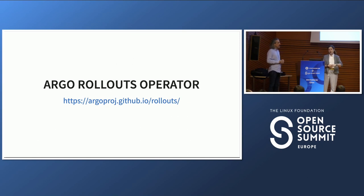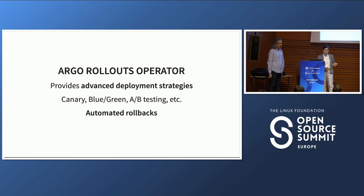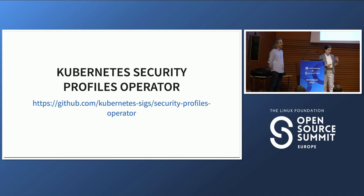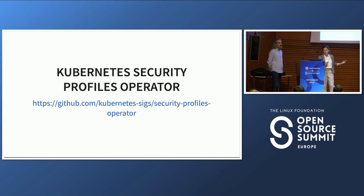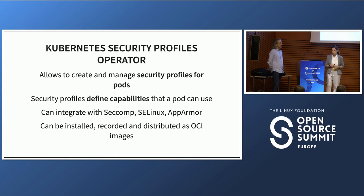We use the FluxCD Helm operator, which manages Helm charts for our environments in a declarative state — we can read the status of custom resources so our main operator can see whether the Helm operator was successful. We are also starting to use Argo Rollouts, which provides advanced deployment strategies like canary deployment, A/B testing, and blue-green, plus automatic rollbacks. For security — since customers run code on our clusters — we use the Kubernetes Security Profiles Operator to define capabilities a pod can use. It can be integrated with SEComp, SELinux, or AppArmor, and profiles can be distributed via OCI images.